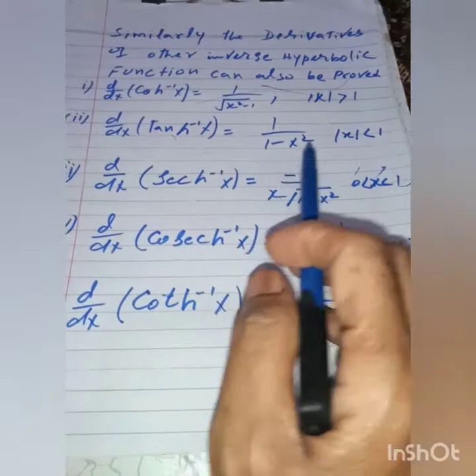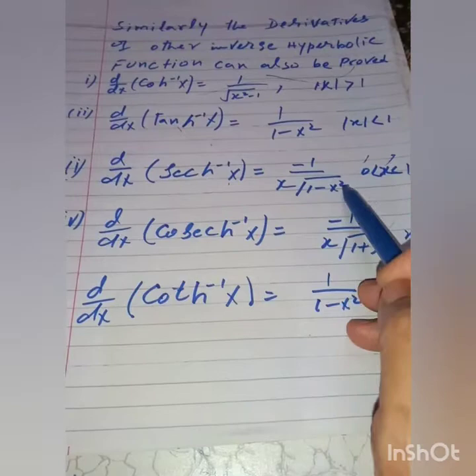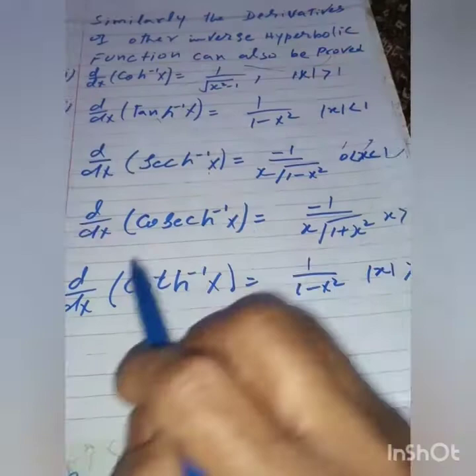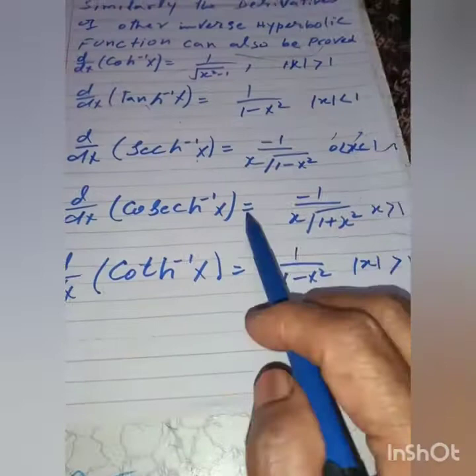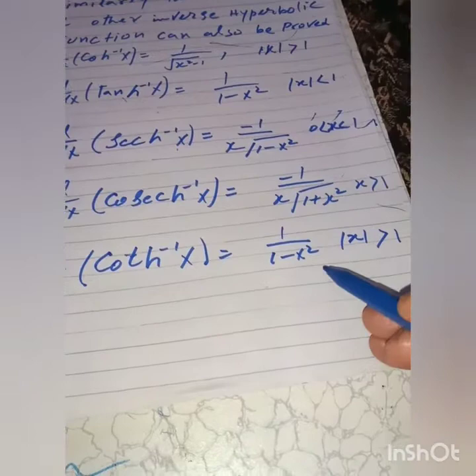Similarly, d/dx of sech⁻¹(x) is equal to −1 over x·√(1−x²), where 0 < x < 1. Similarly, d/dx of csch⁻¹(x) is equal to −1 dividing by x·√(1+x²), where x > 1, and equals 1/(1−x²) as |x| > 1.